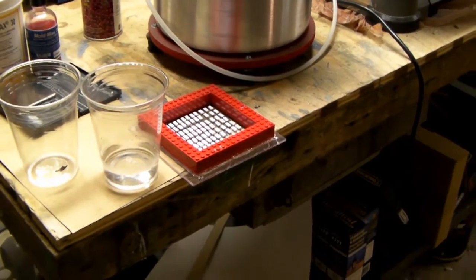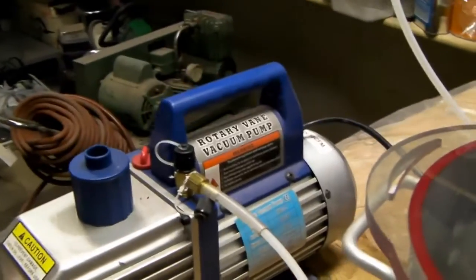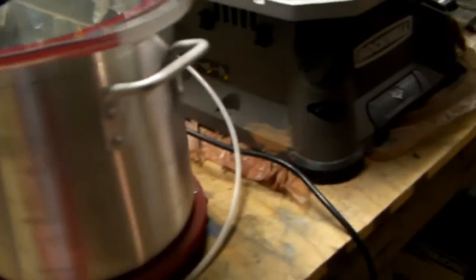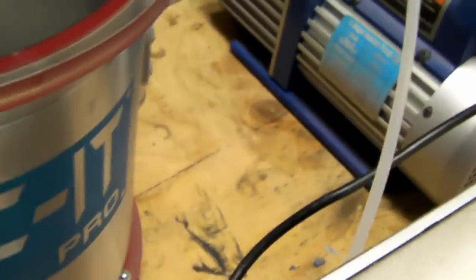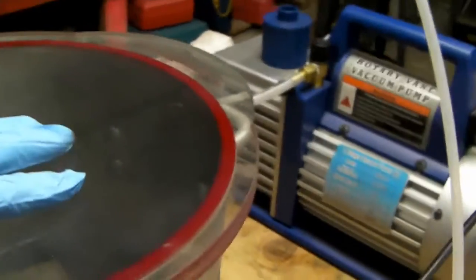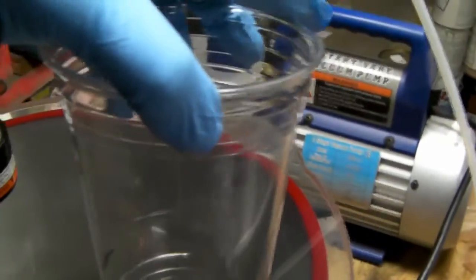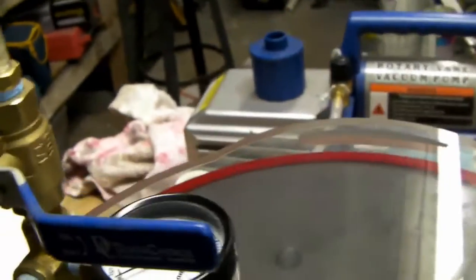I'll show you my setup real quick. I have a 10 CFM vacuum pump and a vacuum chamber by Vac-It Pro. I got all this stuff off eBay. Inside there I put a brick and some weights to give some displacement so it's not so much volume, since we're only using one of these solo cups.